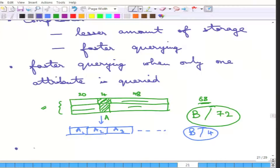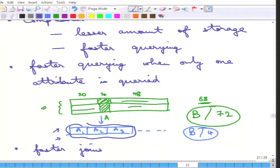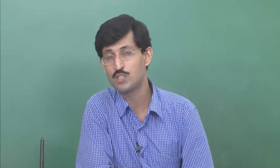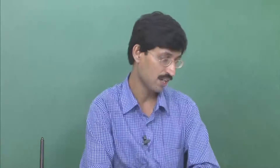This also allows faster joins. Joins are generally on two columns — one from table A and another from table B. You go over that attribute in table A and attribute B in the second table, and by accessing fewer disk blocks, join conditions between more tuples can be checked. Only if the attribute A and attribute B values match does the actual tuple need to be output. So even joins are faster.